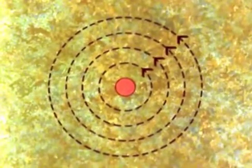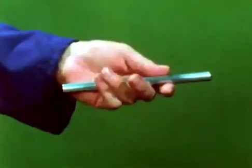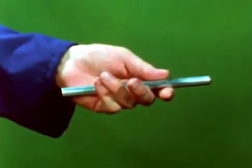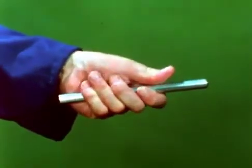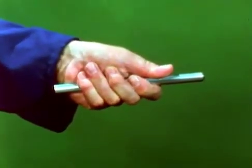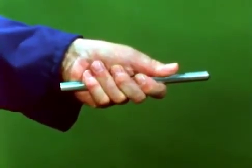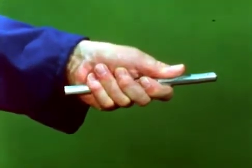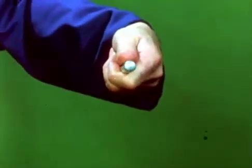Here's how we find out which. You imagine yourself gripping the wire in your left hand, note that left hand, with your thumb pointing in the direction in which the electron current is flowing. Then your fingers will point in the direction of the lines of force.